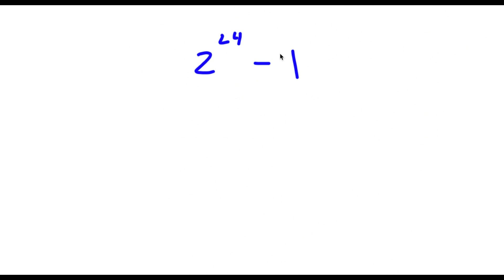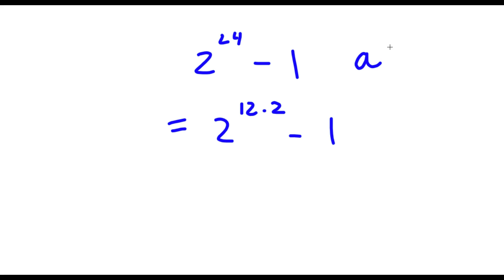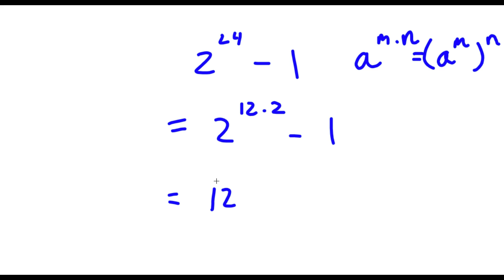So I have 2 to the power of 24 minus 1. Now, 2 to the power of 24 — well, 24 I can rewrite as 12 times 2. So now I have 2 to the power of 12 times 2, minus 1. Now, if I have something in the form a to the power of m times n, this is the same thing as a to the power of m, to the power of n. So 2 to the power of 12 times 2 I can rewrite as 2 to the power of 12, to the power of 2, minus 1.